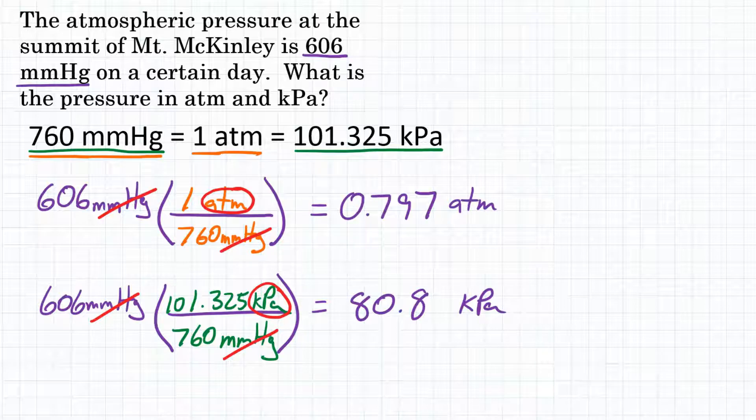There you have it. The atmospheric pressure at the summit of Mount McKinley is 606 millimeters of mercury. What would the pressure be in ATM and kPa? Well, that would be 0.797 atmospheres and 80.8 kPa.